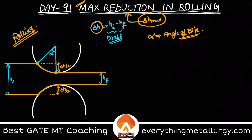If you carefully look at this length over here, this is nothing but my radius — the radius of my roll. And this length here will be r minus delta h by 2, because the total length is r and we subtract delta h by 2.